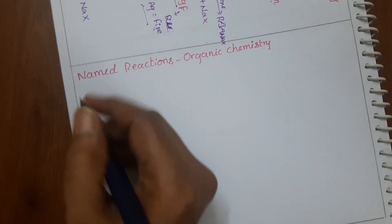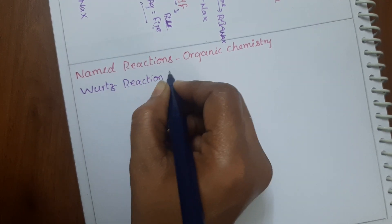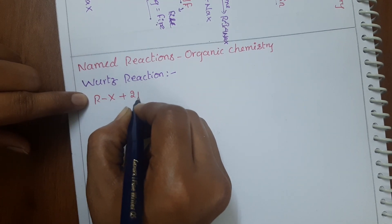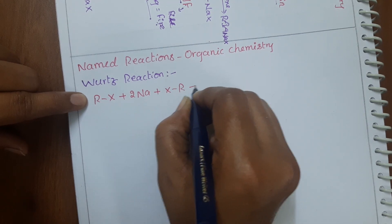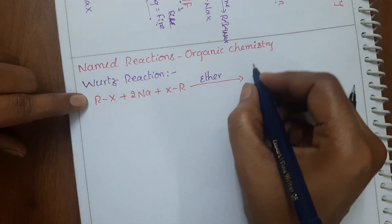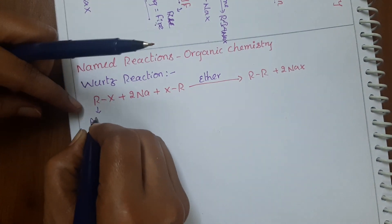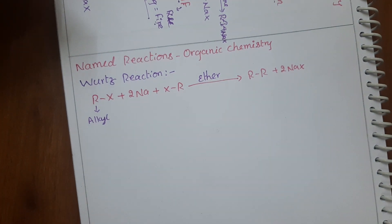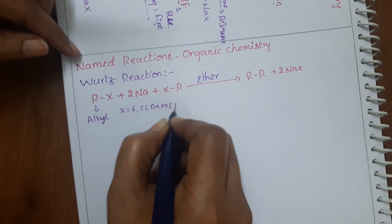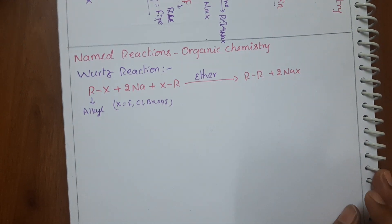First, let us see the Wurtz reaction. So what is meant by the Wurtz reaction? Two moles of alkyl halides react with sodium metal in the presence of dry ether. It will give higher alkanes, along with NaX as a byproduct. Here R is the alkyl group and X can be fluorine, chlorine, bromine, or iodine. This is called the Wurtz reaction.